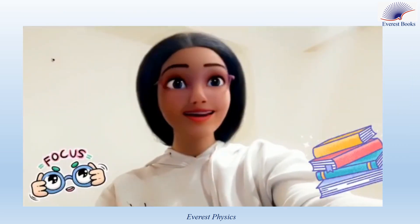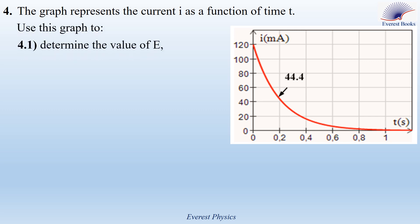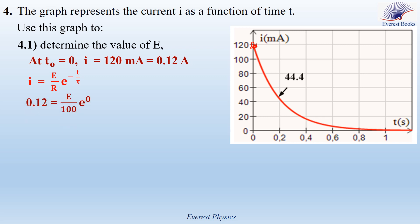Focus please, this is important. Part 4: the graph represents the current I as a function of time. Use this graph to determine the value of E. According to the graph, at time equal 0, the current is equal to 120 milliamperes, which is equal to 0.12 amperes. Using the expression of the current, substitute I equals 0.12 amperes and T equals 0. We get: 0.12 equals E over 100, which is R, times e to the power 0. Since e to the power 0 equals 1, E equals 0.12 times 100, which equals 12 volts.